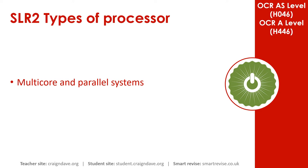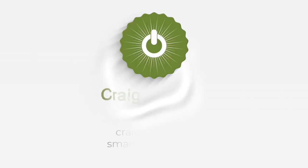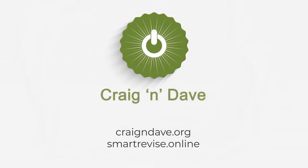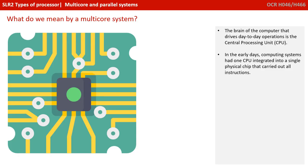In this video we discuss multi-core and parallel systems. So what do we mean by a multi-core system? The brain of a computer — the thing that drives the day-to-day operation — is the central processing unit, or CPU.